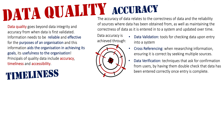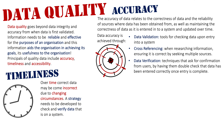Next, we'll move on to timeliness. Timeliness relates to the fact that over time, data can become incorrect due to changing circumstances. For example, you might fill in your address details into a government website. But if after a year you move house, that address information you gave the government is now wrong.